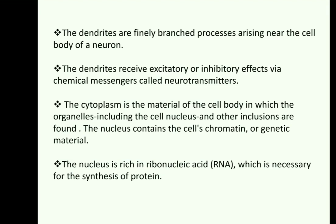Some important points related to neurons: dendrites are finely branched processes arising near the cell body of a neuron. Dendrites receive excitatory or inhibitory effects via chemical messengers called neurotransmitters. The cytoplasm is the material of the cell body in which organelles, including the cell nucleus and other inclusions, are found. The nucleus is rich in RNA, which is necessary for the synthesis of protein.